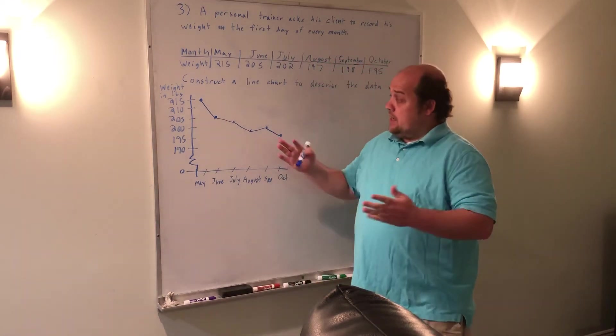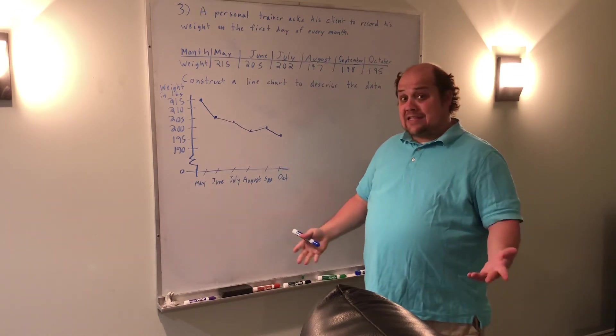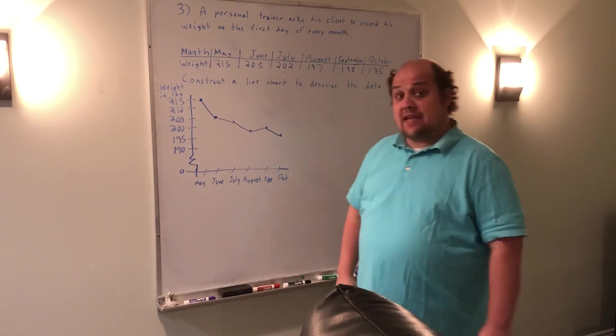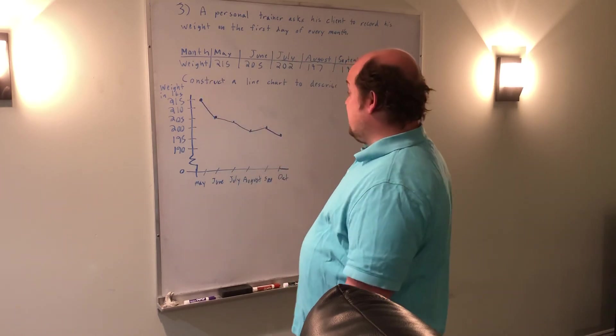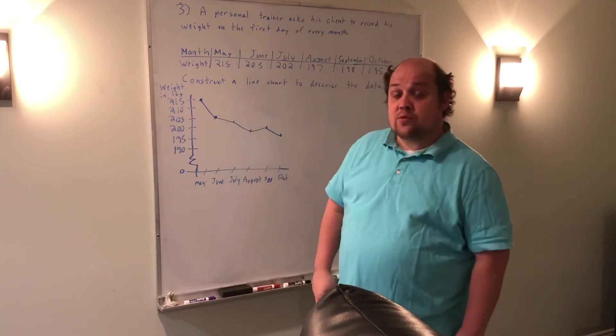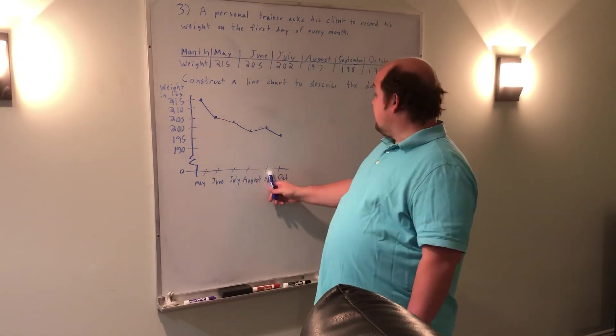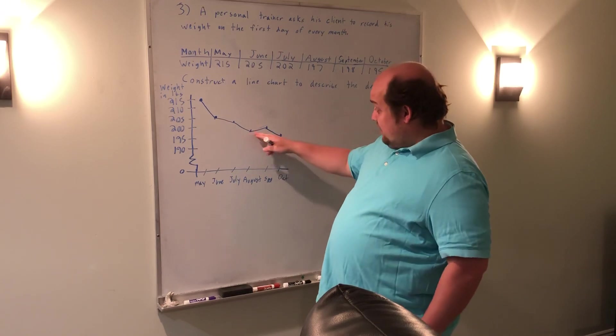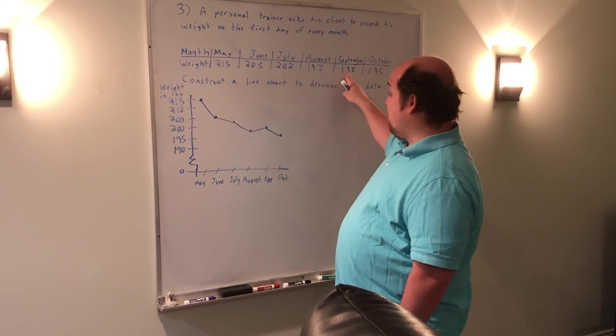This would be the correct version of the line chart that would go along with this data. I could then ask things like, what's the general trend in the data? The general trend here is that the weight is decreasing as time increases. If I ask something like, between what two months was there an increase in weight? The answer would be between August and September. Note that there is a slight upward tick there to represent the 197 to 198.